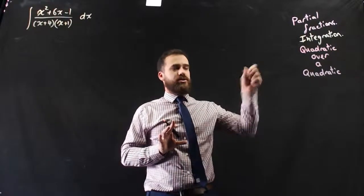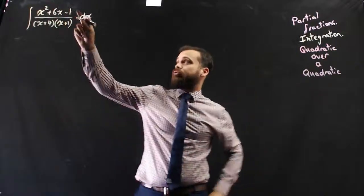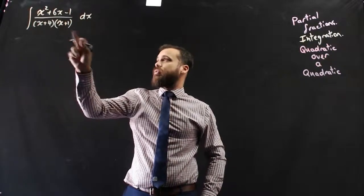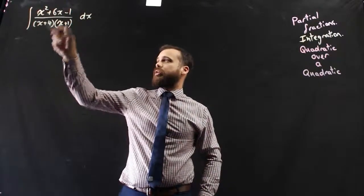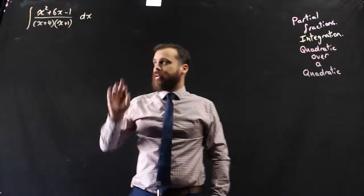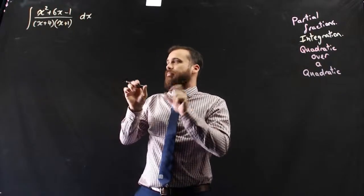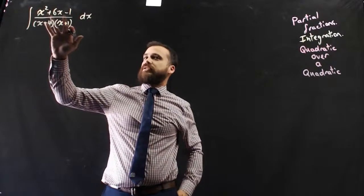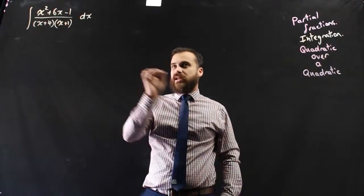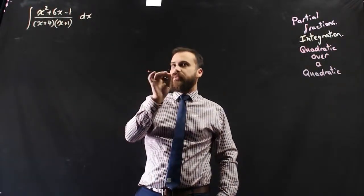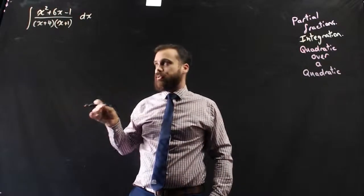Still doing partial fractions here for integration. This time it's going to be a quadratic function over a quadratic function. So this is a quadratic, this is a factorized quadratic. Now you might look at the factorized quadratic and think I can split that, but that makes life difficult here because we don't get a nice neat a, b, like we have in the other examples.